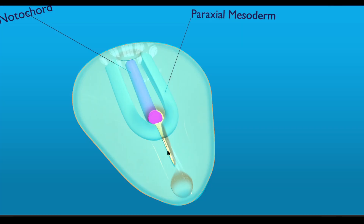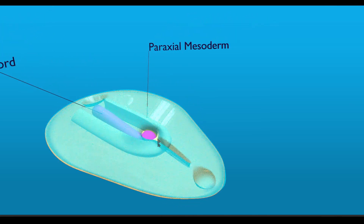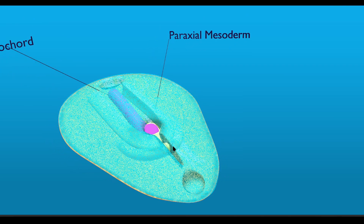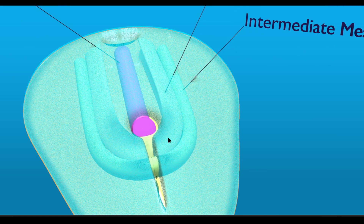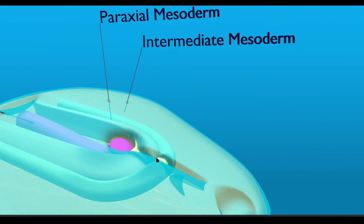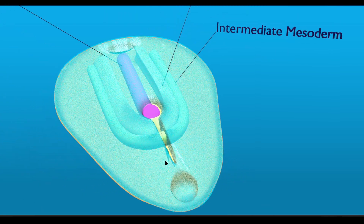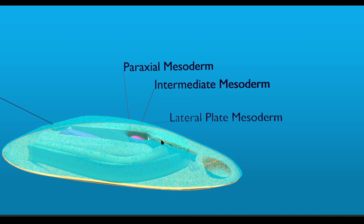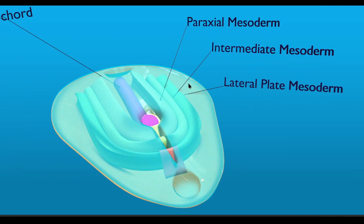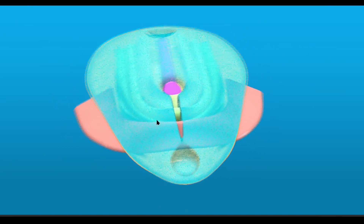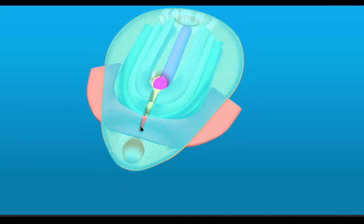The fate of these ingressing cells is determined by the location from which they ingress downward. For example, cells that ingress from the cranial part of the primitive streak will form the paraxial mesoderm. Cells which ingress from the mid streak — the middle part of the primitive streak — will form the intermediate mesoderm. Cells which ingress from the caudal part of the primitive streak are going to form the lateral plate mesoderm, and finally cells that ingress from the caudal most part will contribute towards the extra embryonic mesoderm.